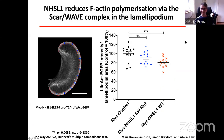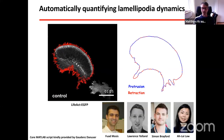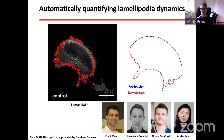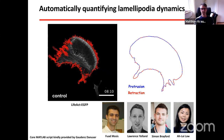To extend this, we over-expressed either wild-type NHS-like 1 or the SCAR/WAVE binding mutant in B16F1 cells and transfected a tricistronic plasmid also co-transfecting LifeAct-GFP. We measured LifeAct intensity in the lamellipodia area as a readout for actin intensity, and observed that NHS-like 1 wild-type over-expressing cells had significantly decreased actin intensity in the lamellipodium, suggesting that NHS-like 1 reduces actin polymerization by the SCAR/WAVE complex in the lamellipodium. To quantify the effect on lamellipodia dynamics, we automatically quantified lamellipodia dynamics using a MATLAB script kindly provided by Gaudenz Danuser.